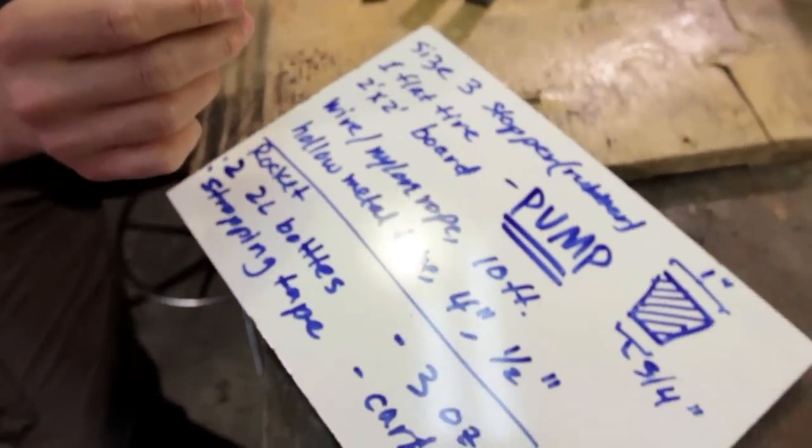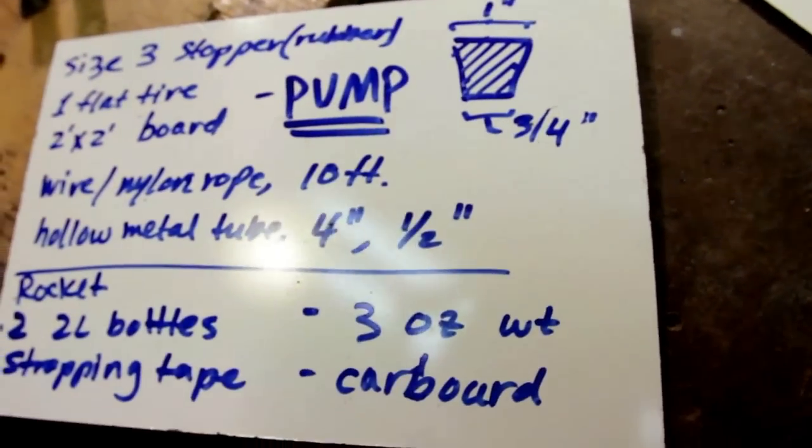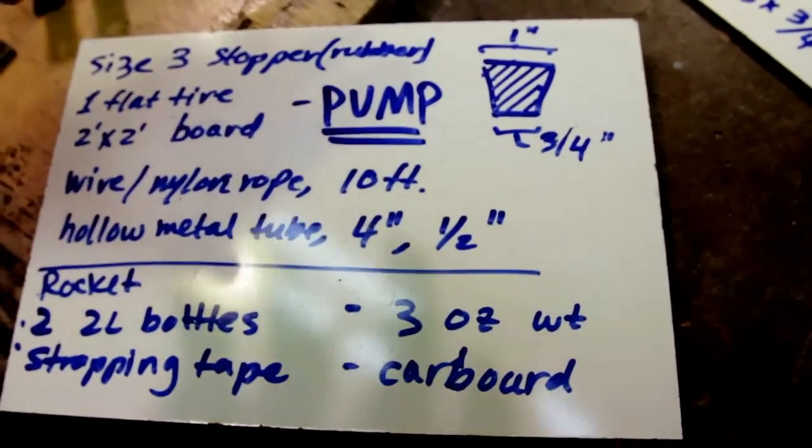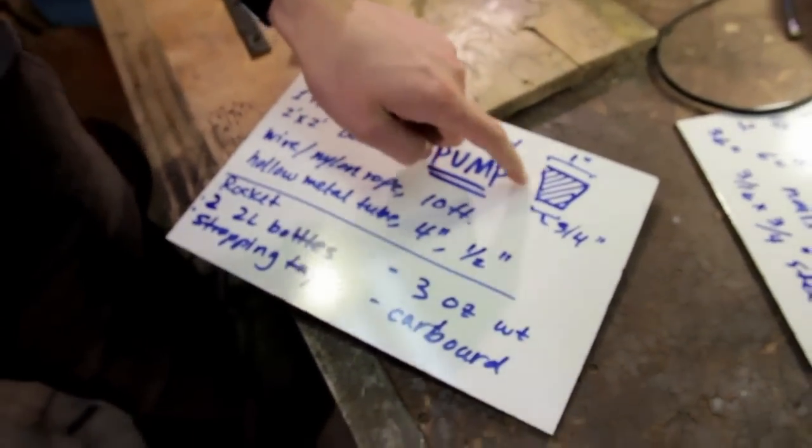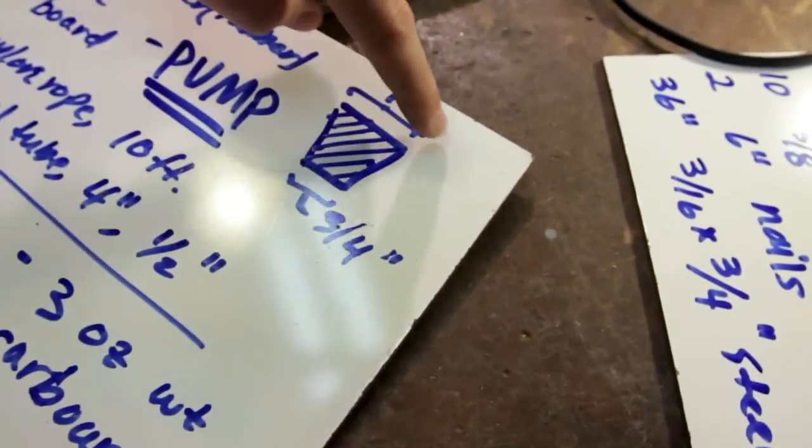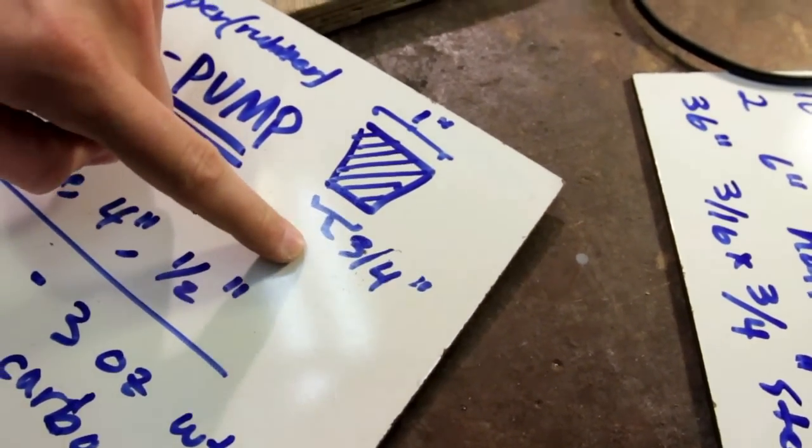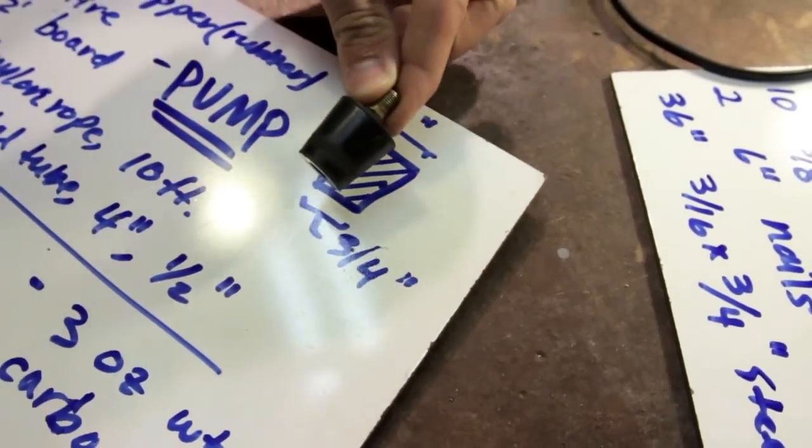You can get it at any hardware store if you go to the section that sells the bolts and nuts and stuff like that. There's little boxes that they usually have with all sorts of different rubber things and washers and stuff. And you're going to need one of those. 1 inch on top, 3/4 inch on the bottom.